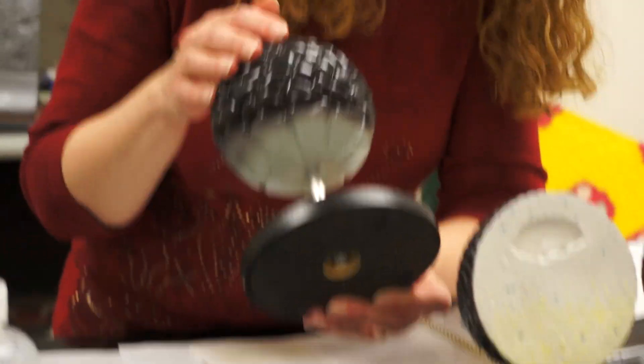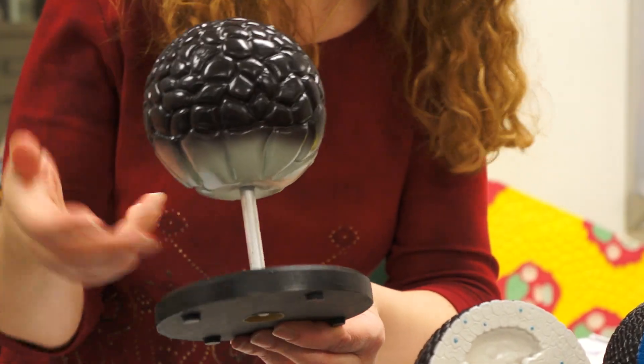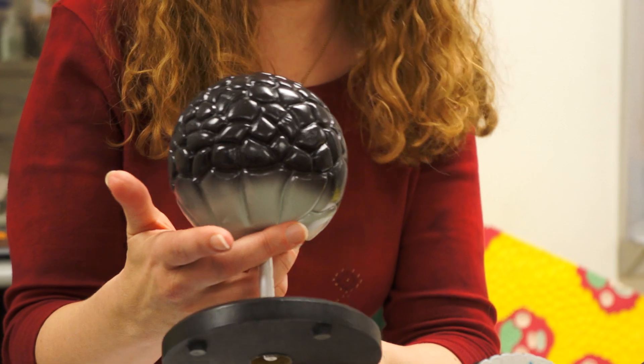You have your animal pole cells here, vegetal pole cells. Animal pole cells have the pigment so they appear darker. Vegetal pole cells are the yolk cells, no pigment.